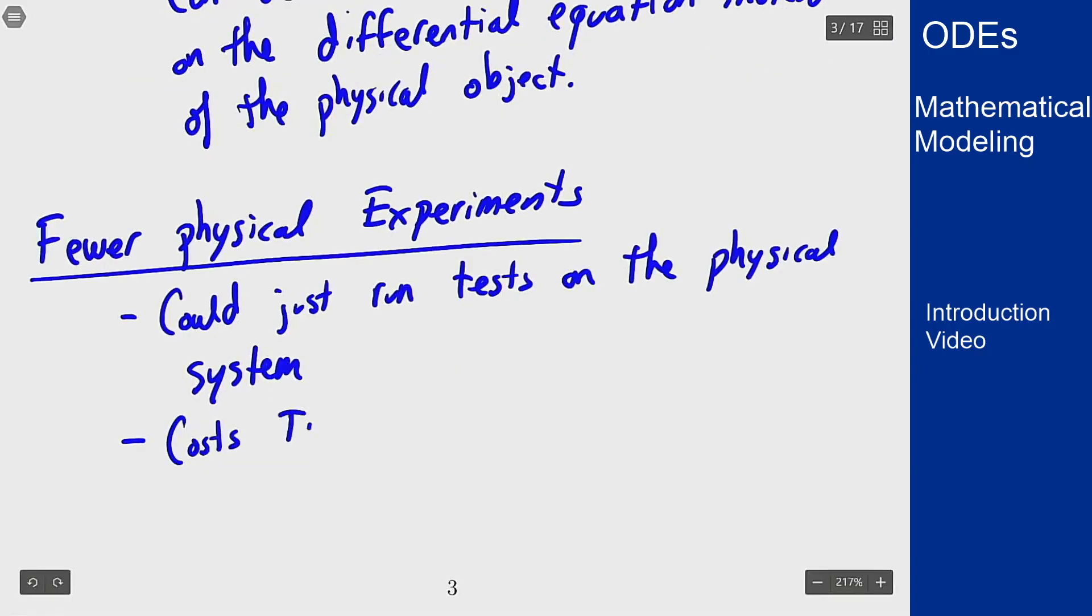This costs time because these experiments might take a while to run in the real world, but in the model I can write the solution right away and get the answer very quickly. It could cost money just because you have to run this over and over again. It can cost materials. There are a lot of things that get eaten up when you run an experiment over and over again.